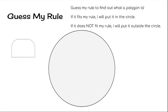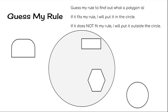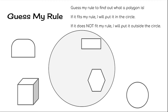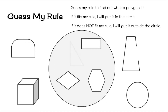Here we go. This shape is not a polygon — that's why it's outside the circle. But this one, the rectangle, is a polygon, so I put it in there. Here's another polygon that fits my rule, but this shape, a circle, does not fit my rule. A cube also doesn't fit my rule. But a rhombus does. This weird shape does not fit my rule. But this triangle does fit my rule. Take a minute to think about what you notice here and guess what my rule is for polygons.